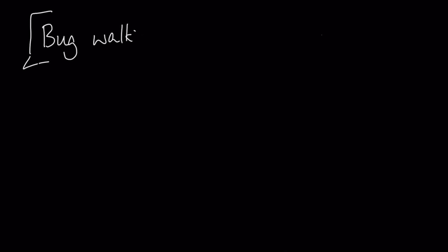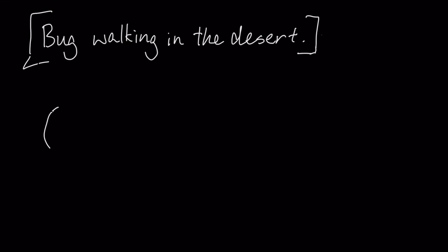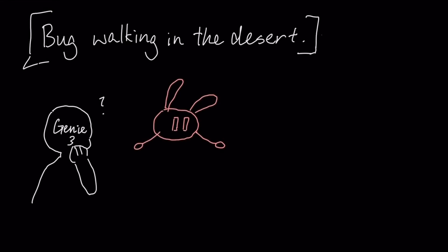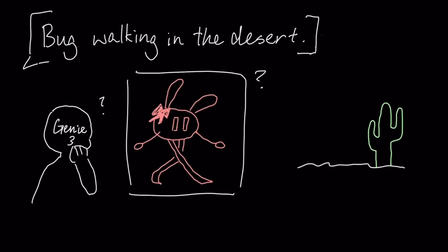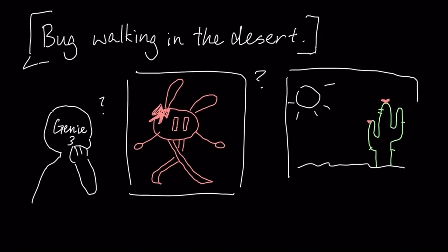This requires a deep understanding of how objects within the world should behave based on certain inputs or events. For example, if the prompt is 'me walking in the desert,' Genie 3 needs to understand how my character might move or how the environment might affect my movement.